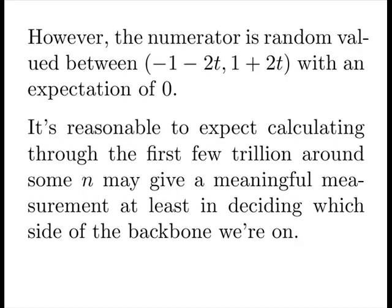However, the numerator is random valued between minus 1, minus 2T, and 1, plus 2T. But the expectation is zero, so it's reasonable to expect calculating through the first trillion around some n might give a meaningful measurement, at least in deciding which side of the backbone that we're on.